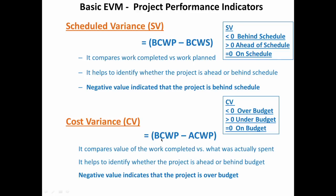Similarly, cost variance is budgeted cost of work performed minus actual cost of work performed — the value you got for the work you did versus the money you spent. Cost variance less than 0 means over budget, greater than 0 means under budget, and equal to 0 means on budget.